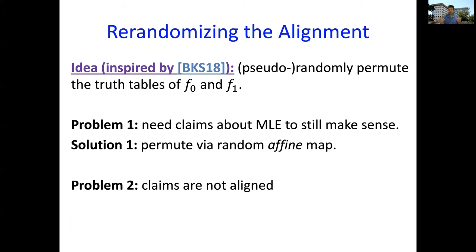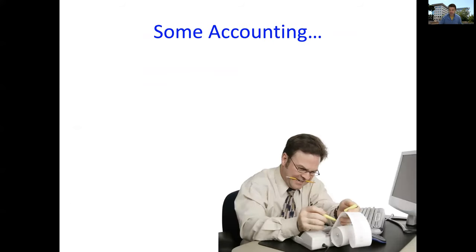The second problem is that once we do these permutations, then also the claims that we have about f0 and f1 are no longer aligned. When we look at the claims that we got about the new row, the random linear combination, we're going to have double the number of claims. The way that we deal with that is by introducing another sub-protocol that reduces the number of claims back to the same as it was in the beginning.